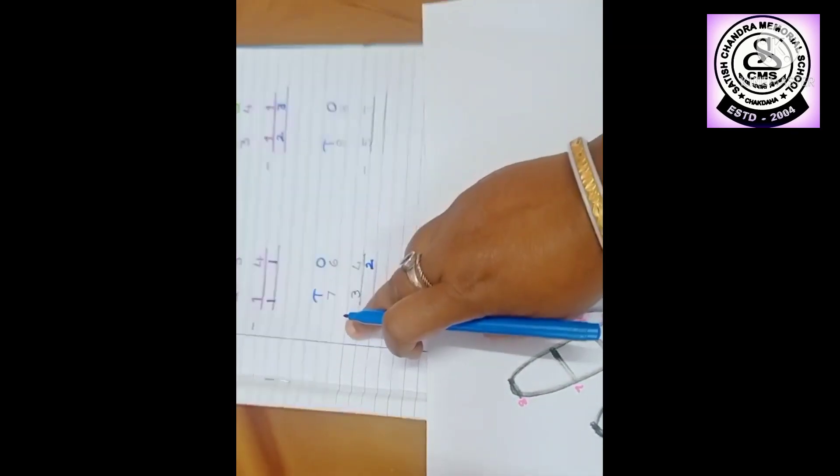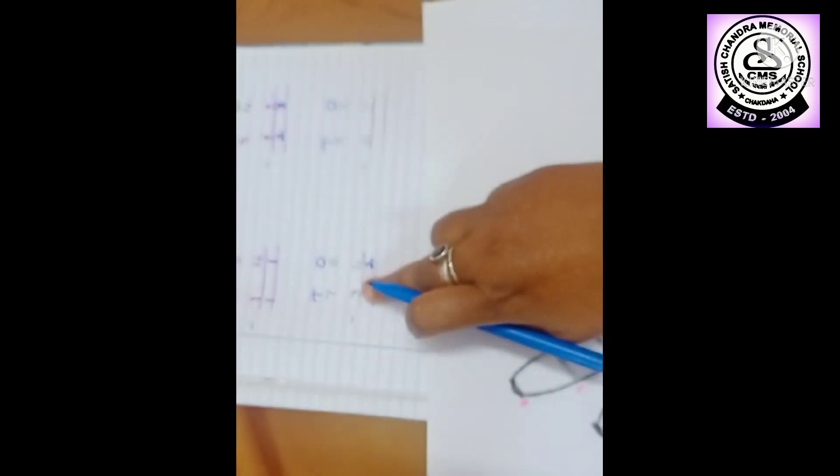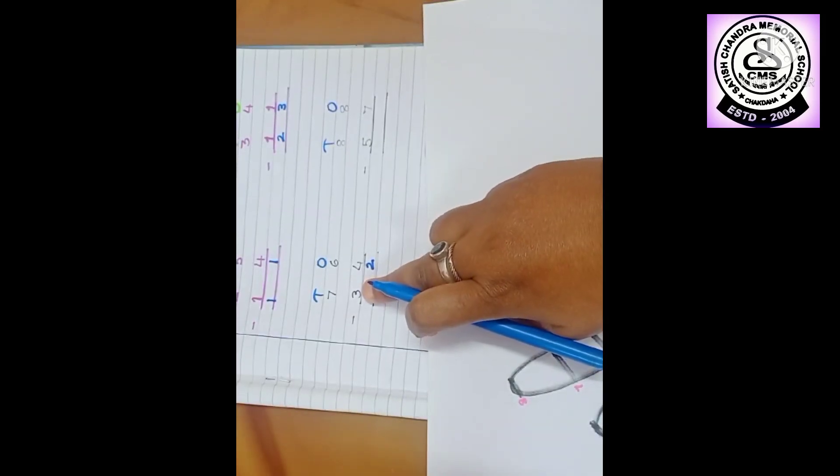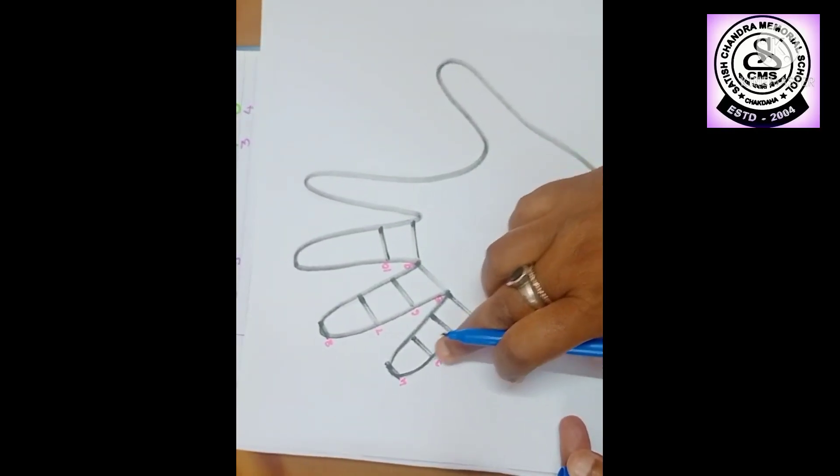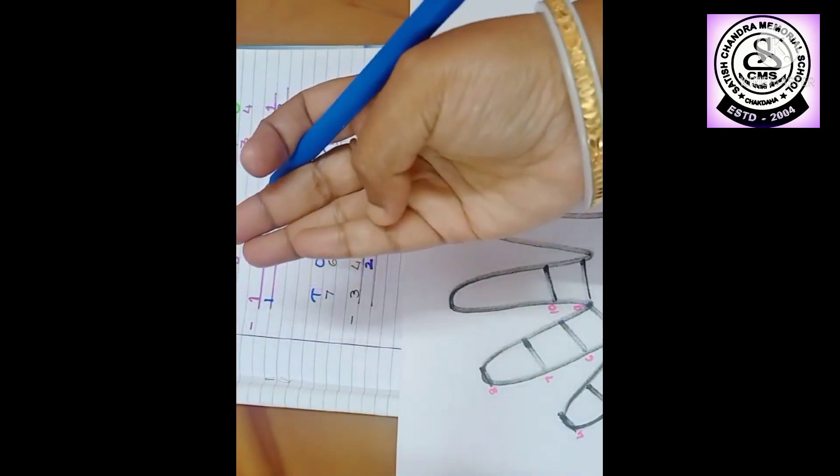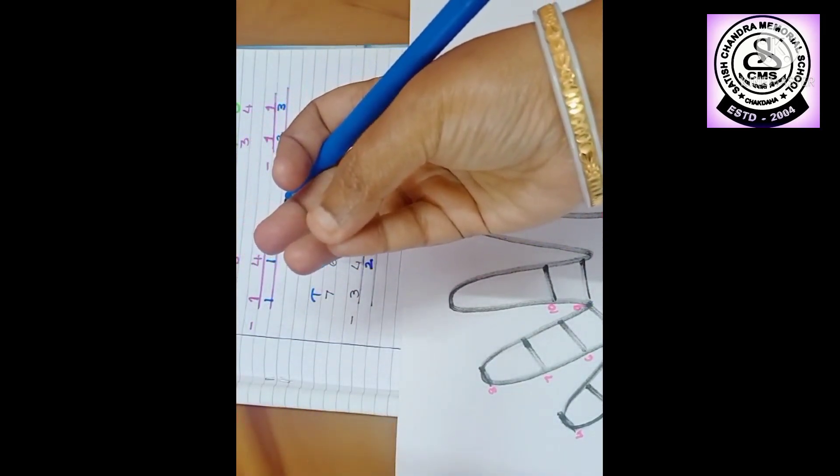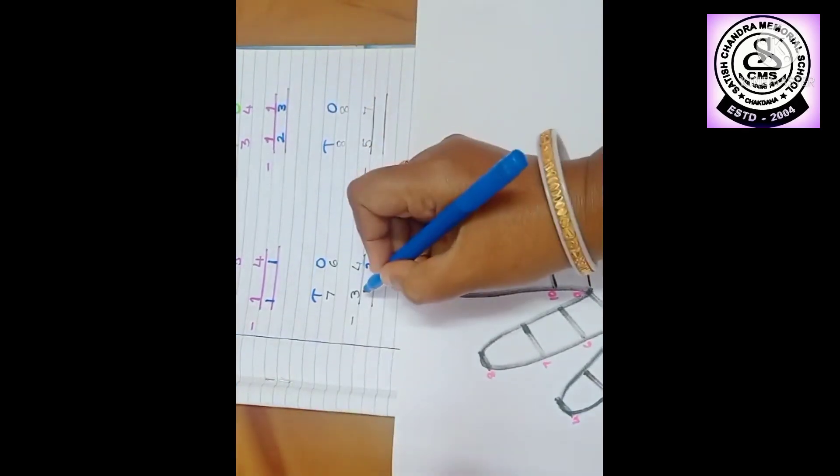Here 7 minus 3, 7 minus 3. So after 3, 4, 5, 6, 7. After 3, 4, 5, 6, 7. See here, the 4 number. Yes, the house number is 4.